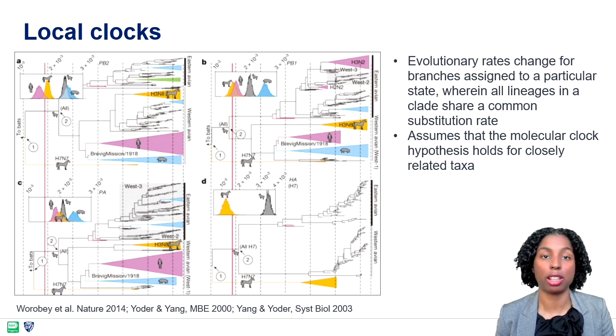Besides strict and relaxed molecular clocks, local clocks have been developed as something in the middle, allowing evolutionary rates to change for branches assigned to any particular state, wherein all lineages in a clade share a common substitution rate. Local clocks are based on the assumption that the strict molecular clock hypothesis holds for closely related taxa. In this case, Worobey et al. employed a host-specific local clock that allows individual host types to have different rates of molecular evolution.